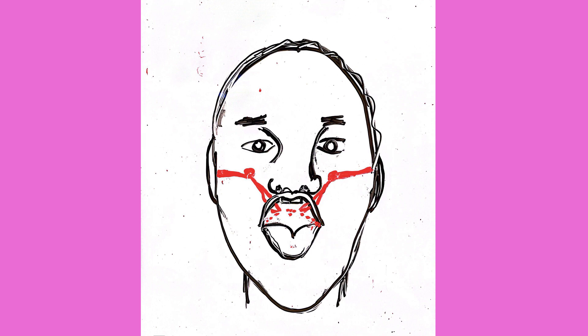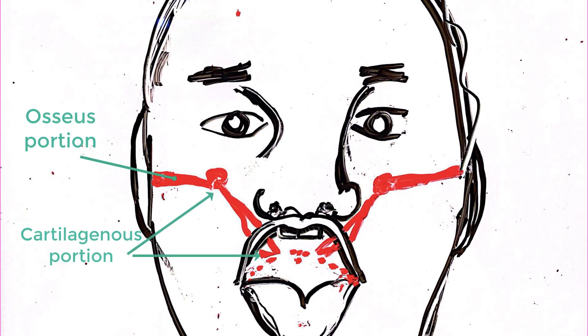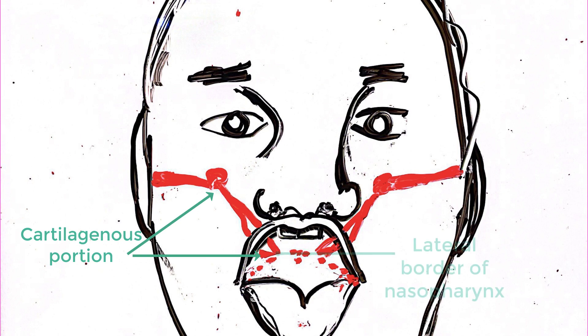The cartilaginous portion of the Eustachian tube continues down through the palatine musculature, until it opens up into the lateral border of the nasopharynx.